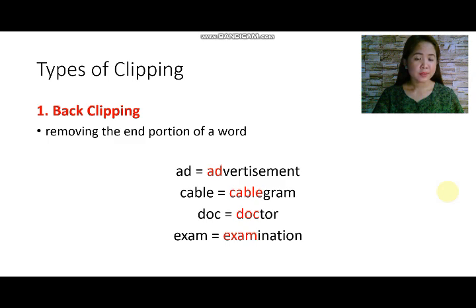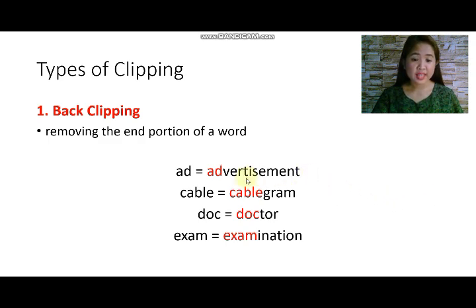There are types of clipping. The first one is back clipping. Back clipping occurs through removing the end portion of a word. For example, from the word advertisement, we can just have 'ad'. From the word cablegram, we can just say 'cable'.